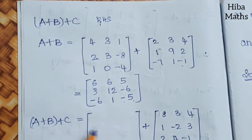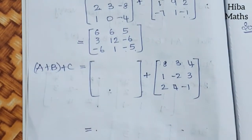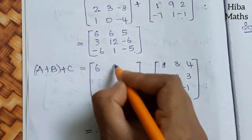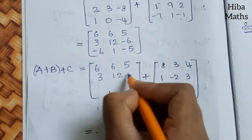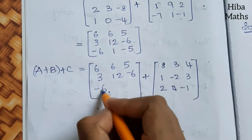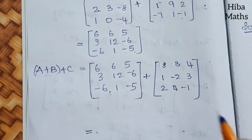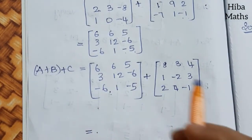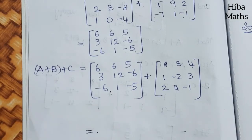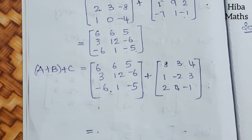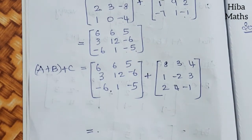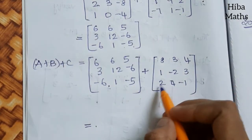Now we have found A + B. Write it down, then add C to it. A + B = [6,6,5; 3,12,-6; -6,1,-5]. Now add C = [8,3,4; 1,-2,3; 2,4,-1] to this. Let us compute (A+B) + C.